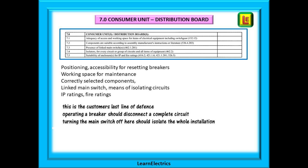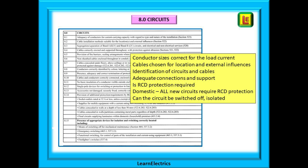Section 7 is all about the consumer unit or distribution board — accessibility to operate the breakers or space to carry out maintenance. In an emergency, if the customer had to turn off the circuit or the whole board, can they get to it easily? Make sure for your part that they can. Is it located where a normal person can access it quickly?